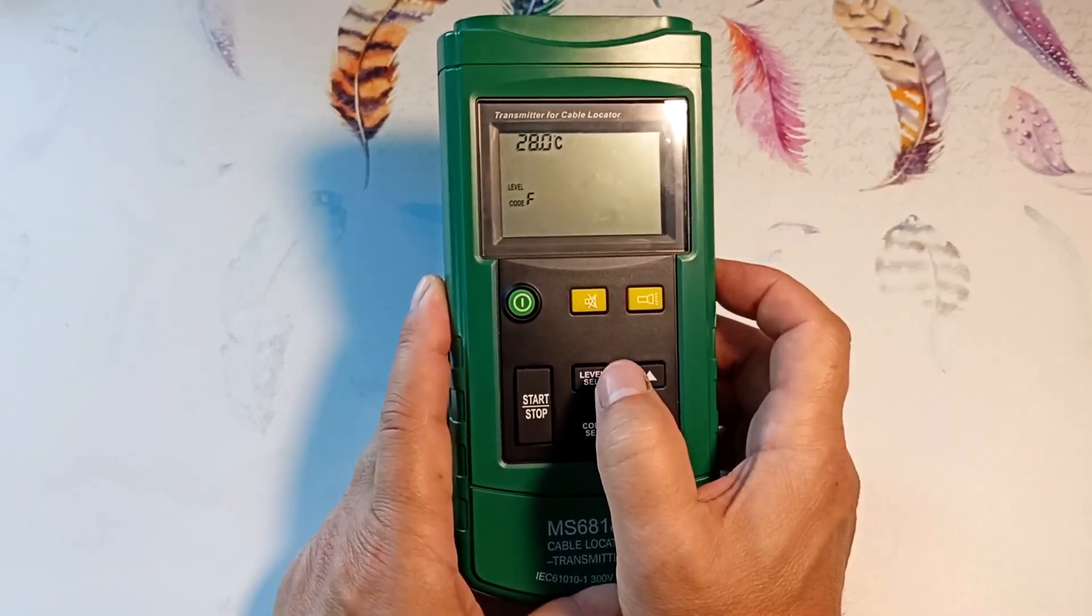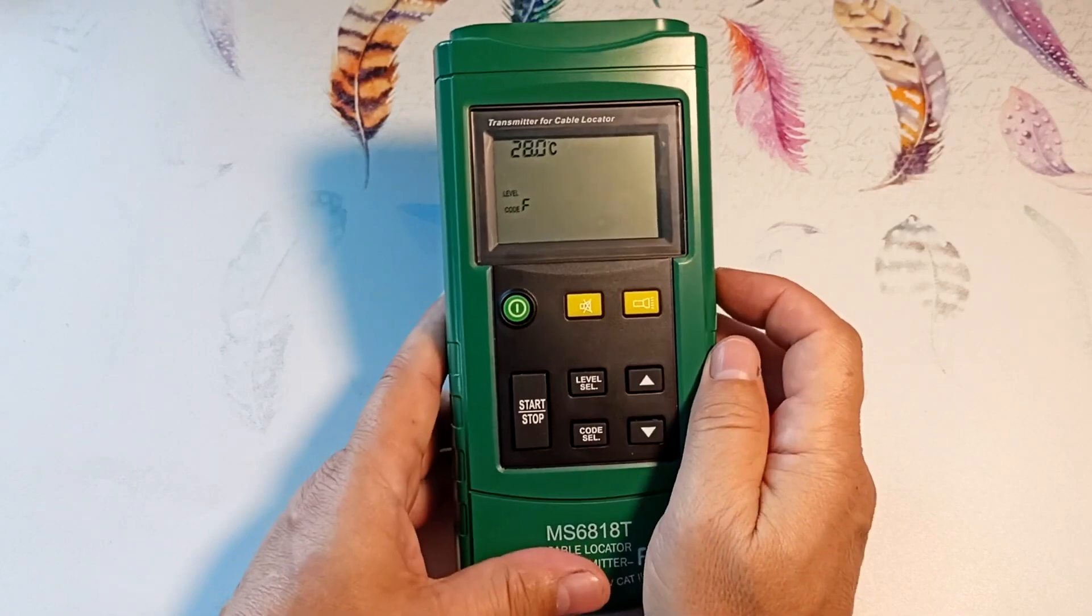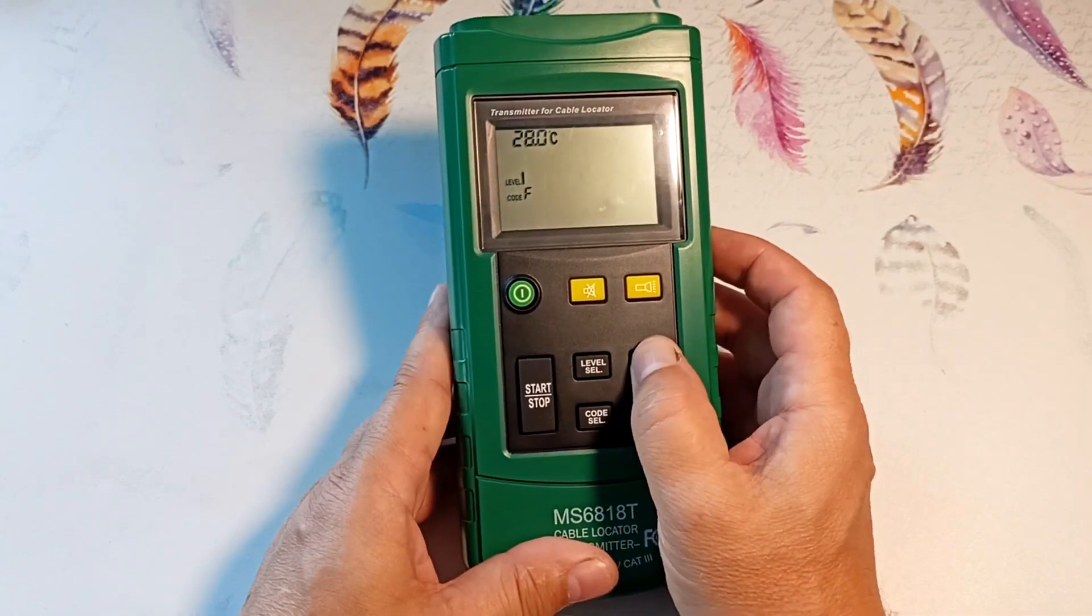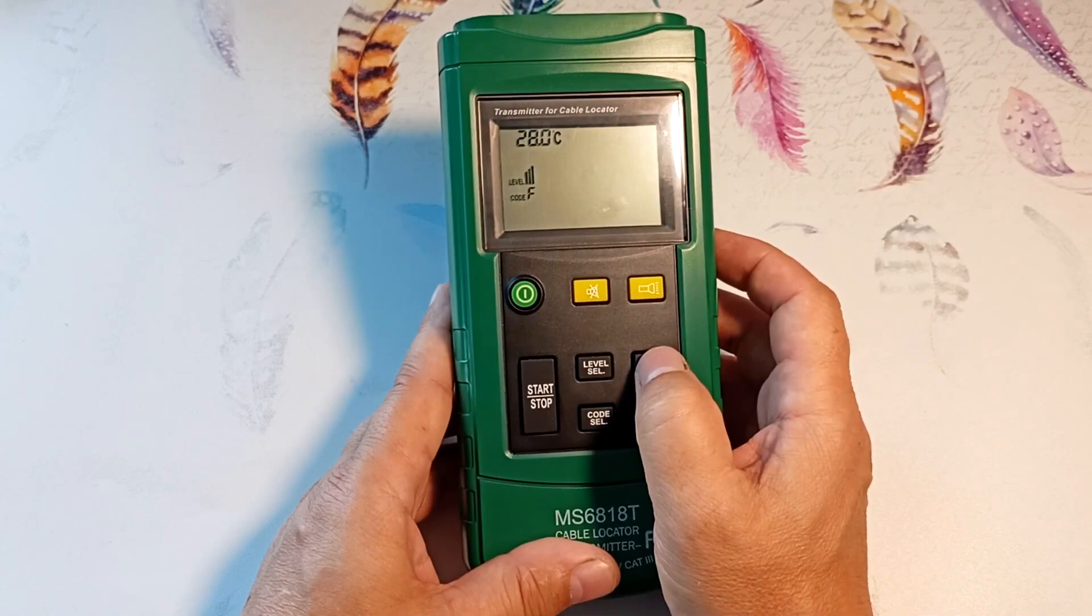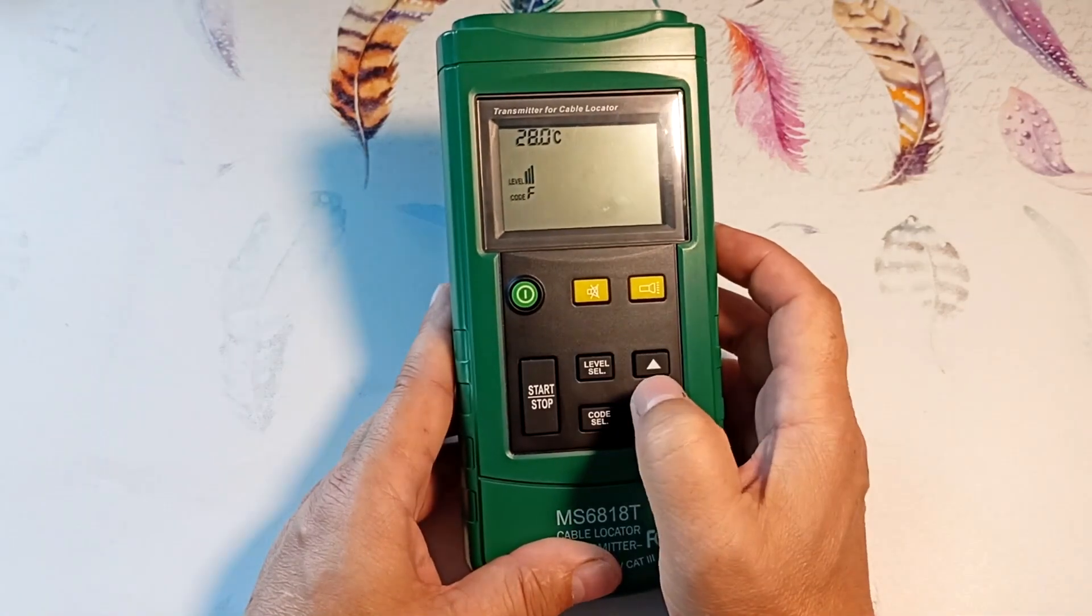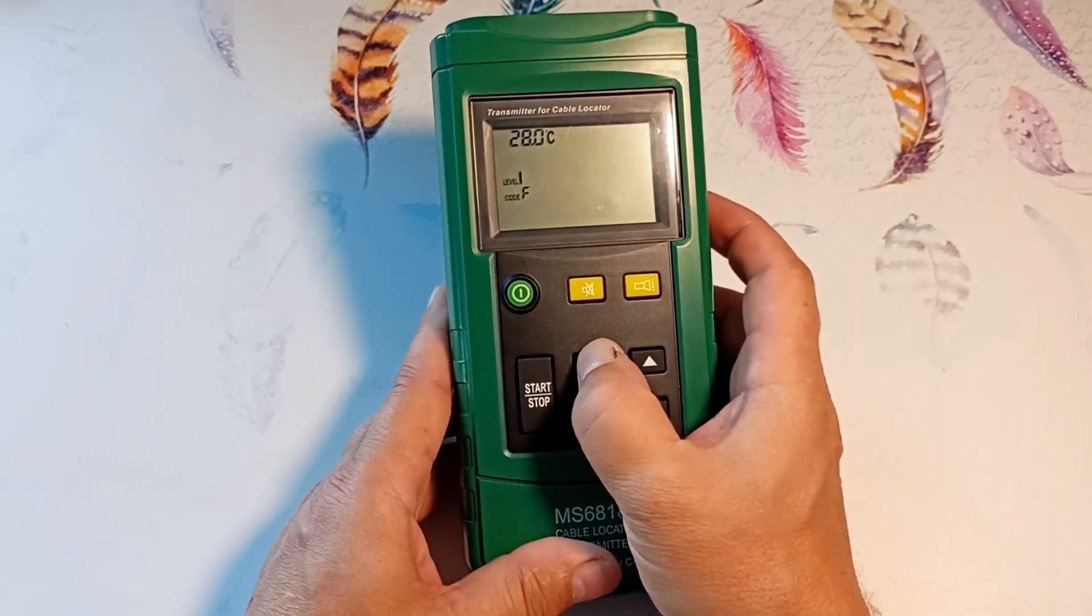Use this button to select the signal level. By default, the minimum level is set. Using the up and down buttons we can change the output level. Press this button again and remember the level.